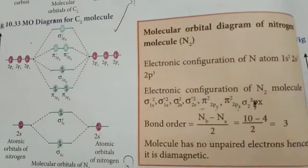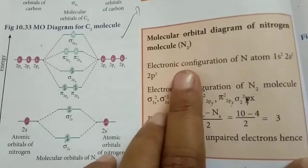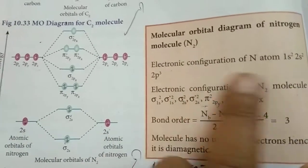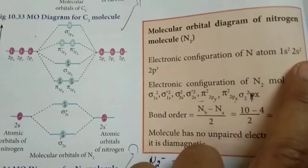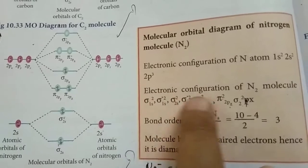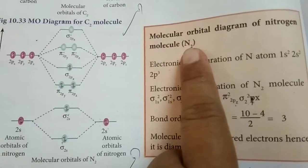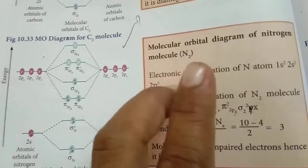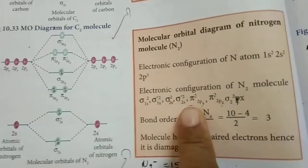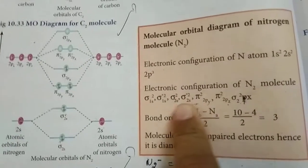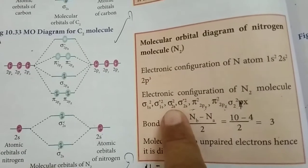Let's draw the molecular orbital diagram of the nitrogen molecule N₂. The atomic number of nitrogen is 7, so its electronic configuration is 1s², 2s², 2p³. For N₂, we have two nitrogen atoms, so total electrons = 7 + 7 = 14 electrons. Since N₂ has 14 electrons, we use the first configuration type.